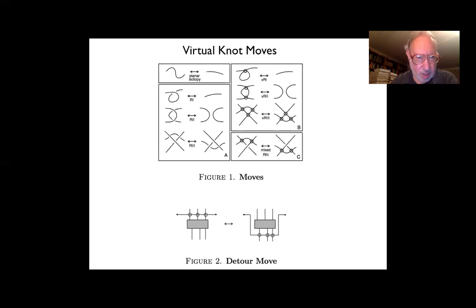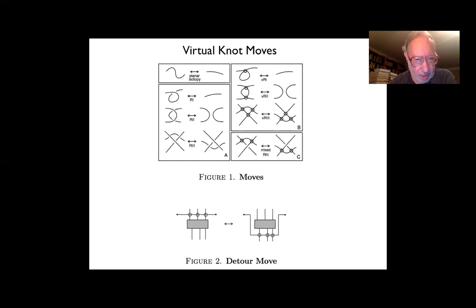Moves are added to the usual Reidemeister moves to handle virtual knot theory diagrammatically. The moves consist of a virtual R1, a little curl that can be removed or added; a virtual R2, crossing through an arc and crossing back; and a virtual R3, which changes the triangle. These are just like the Reidemeister moves except there are no crossing restrictions, because these three moves are entirely among virtual crossings.